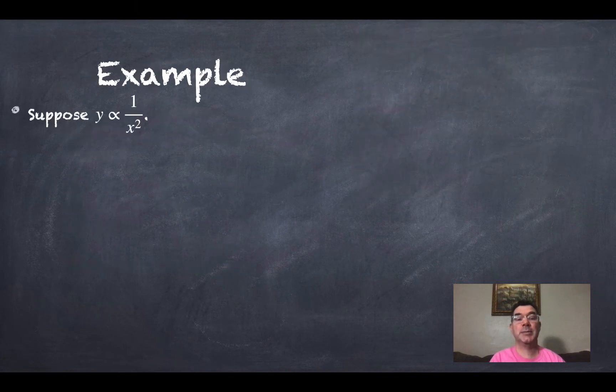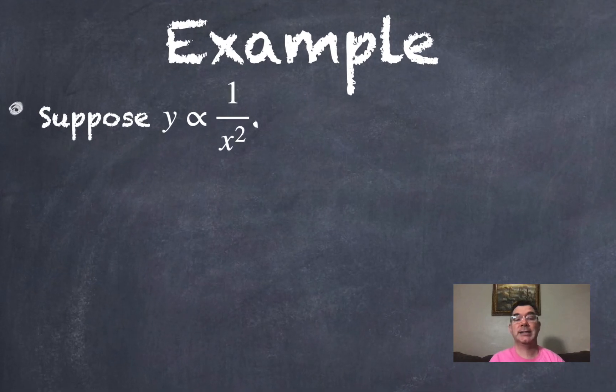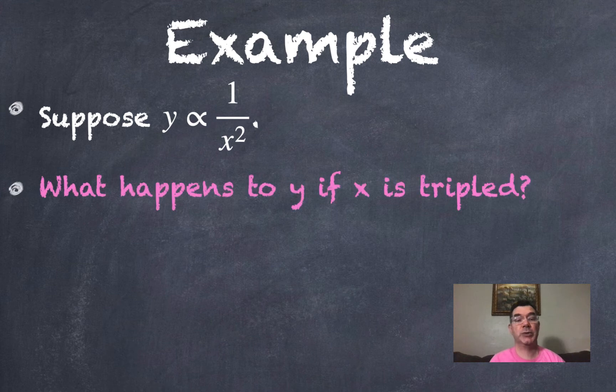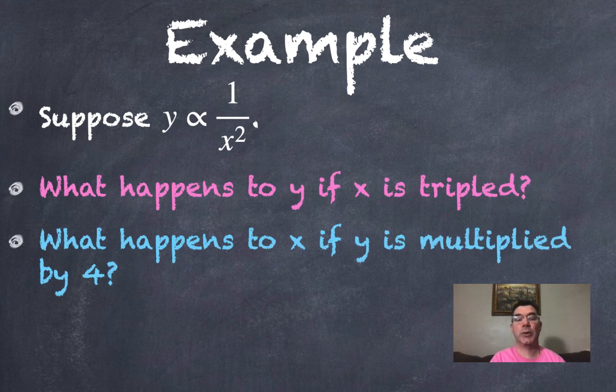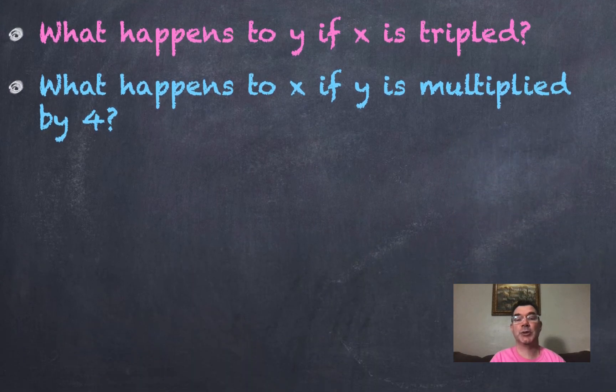So here's an example. Let's suppose that y is inversely proportional to x squared and that's how I would write it. That's the notation I would use. What's going to happen to y if x gets tripled, and what's going to happen to x if y gets multiplied by 4?